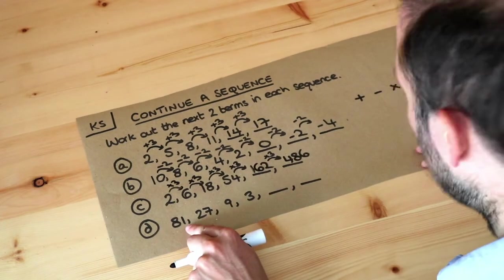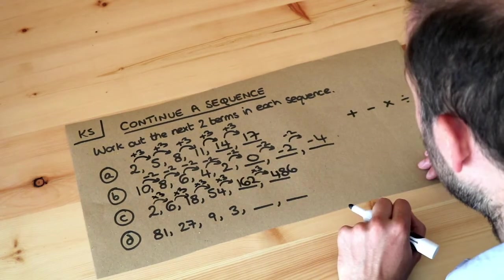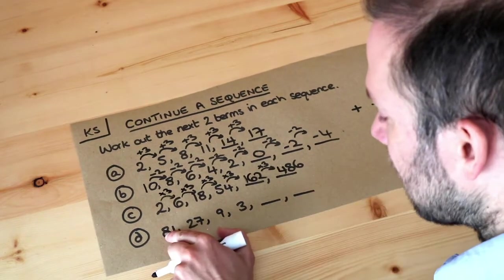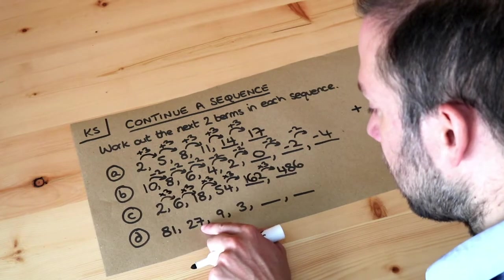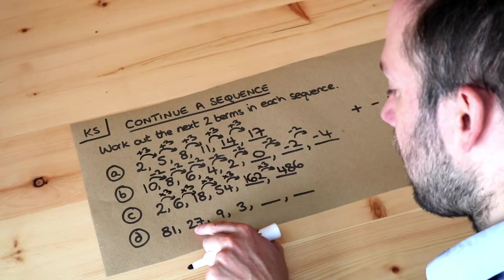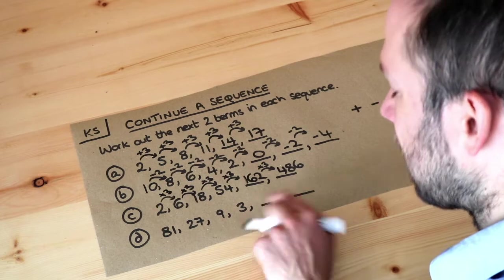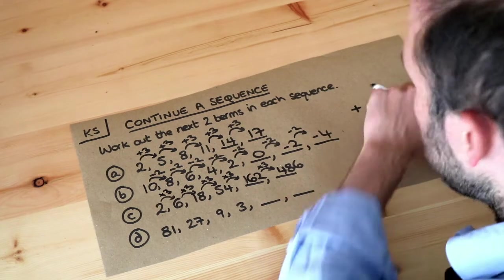Right, what about the last sequence? Well the numbers seem to be getting small each time. So it's either going to be subtracting or dividing to make them smaller. Now is it subtracting? Well no, because for example, to get from 81 to 27, we're subtracting 54. And then we're subtracting 16 and then subtracting 6. So we're not subtracting the same number each time. So it could be dividing.